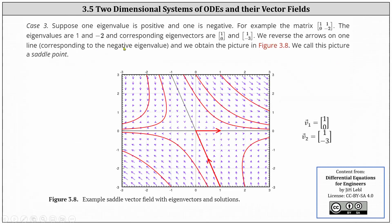Case three: suppose one eigenvalue is positive and one is negative. For example, if we have the two by two matrix with entries 1, 1, 0, and -2, the eigenvalues are positive one and negative two, and the corresponding eigenvectors are the vectors (1, 0) and (1, -3). We reverse the arrow on the line corresponding to the negative eigenvalue. Notice the eigenvalue of negative two has a corresponding eigenvector of (1, -3), but because the eigenvalue is negative, the arrow is pointing in the opposite direction of (1, -3). For the eigenvalue of one, where the eigenvector is (1, 0), the arrow is pointing in the direction of the eigenvector because the eigenvalue is positive. We call this picture a saddle point.